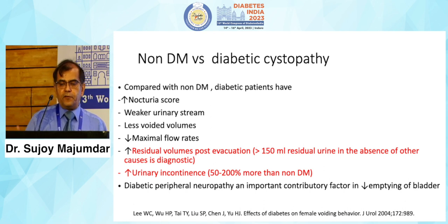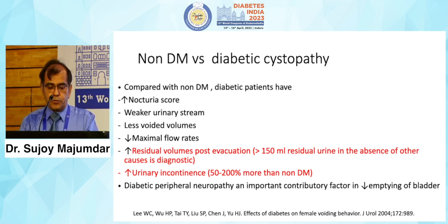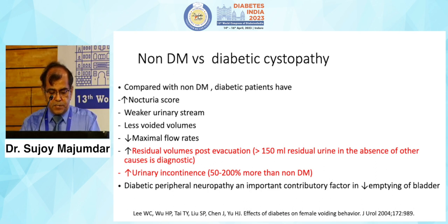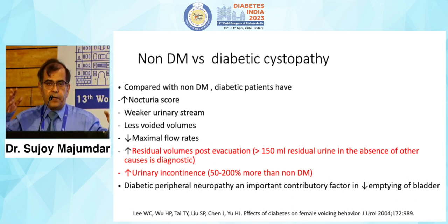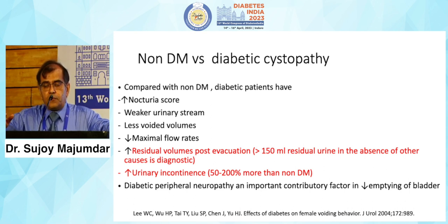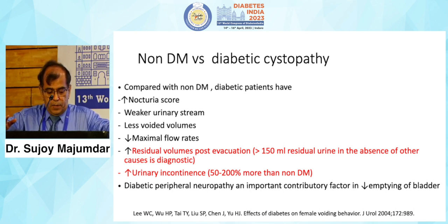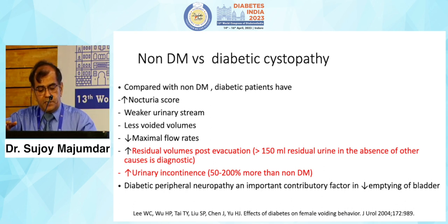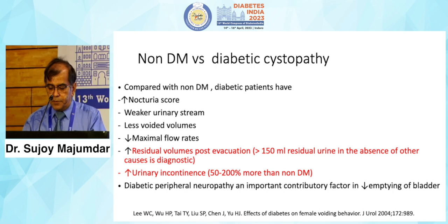Recurrent urinary tract infection is also very important. Diabetes patients are susceptible to recurrent UTI, which damages the bladder urothelium and leads to E. coli penetration, altering the musculoendothelial structure of the bladder — in the long run promoting autonomic decompensation. Compared to non-diabetic cystopathy, diabetic patients have increased nocturia scores, a weaker urinary stream, less voided volumes, reduced maximal flow rates, and increased post-void residual. A residual volume of more than 150 ml without obstructive uropathy is one diagnostic criterion.